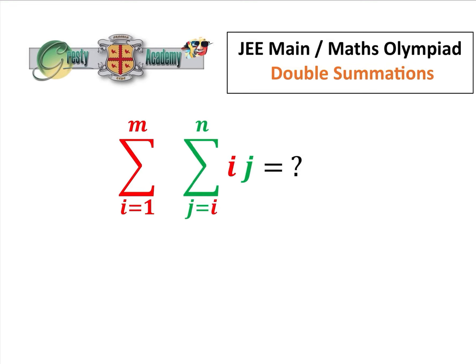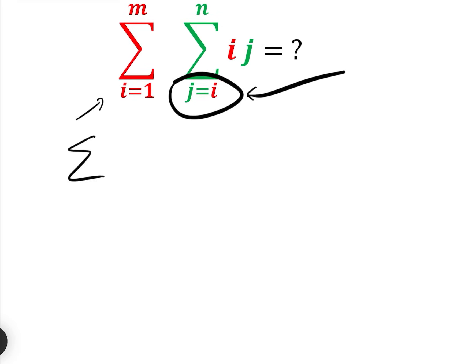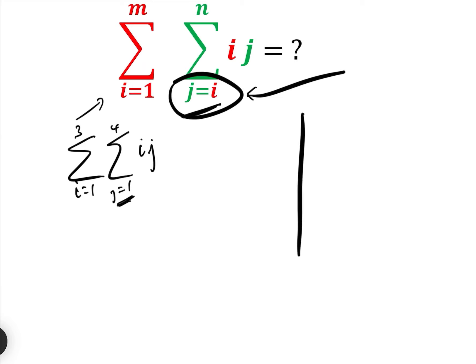In the thumbnail to this video, we have a warning sign and a circle around j equals i, because this little beauty here makes this question much more complicated than standard double summations. What we're going to do is build up to summing and finding a general formula between i equals 1 to m, j equals i to n of i times j. We'll build up to that by first going through what we did in the previous Cresty Academy video very quickly. If you haven't seen the previous video, please go and have a look at it.